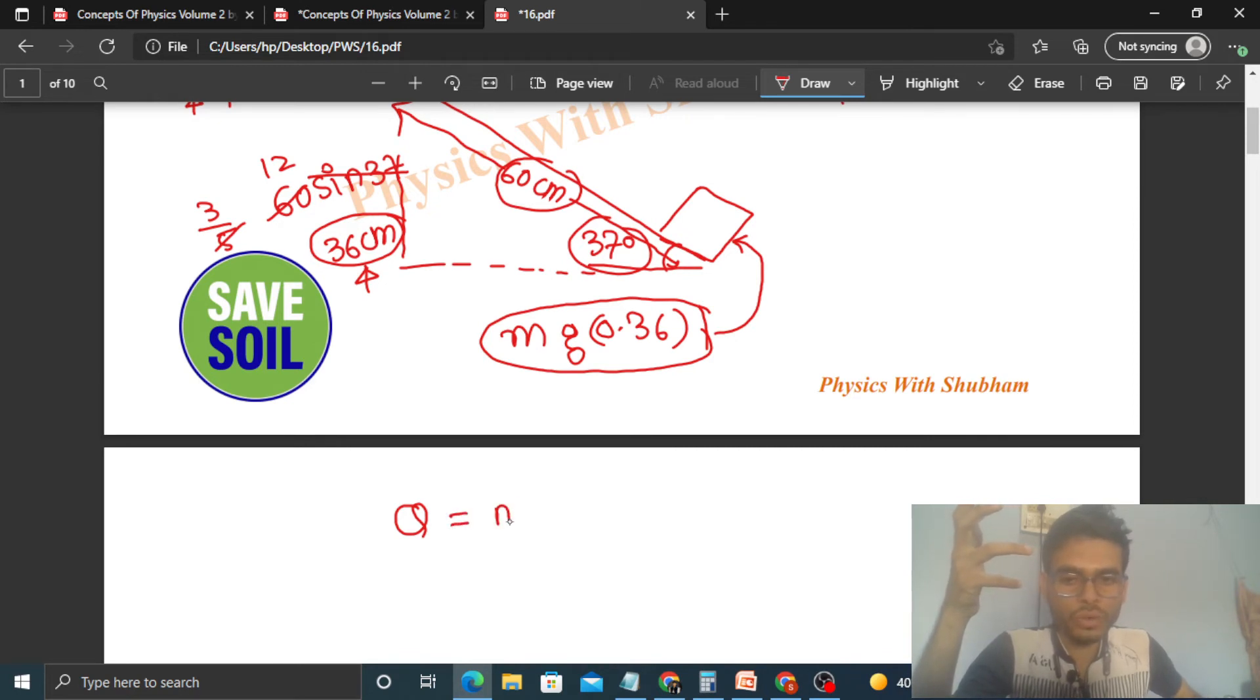Such that Q equals m c delta T. What is Q? How much heat you have supplied. What is m? Mass of that block. What is c? Specific heat capacity of that block. What is delta T? How much change, how much increase in temperature.